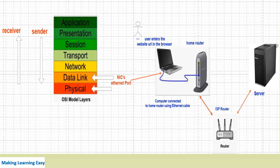After the NIC card receives the data from the Network Layer, it sends the signal to the Physical Layer where your cable is present. The NIC card sends the signal on the Ethernet cable, and via that cable it reaches the home router. The router then forwards it to the ISP router, and from there it goes to the server. Before sending the signal on the Ethernet cable, the NIC performs all the sender steps — converting the packet into Ethernet format to get the frame, which is then sent on the cable.